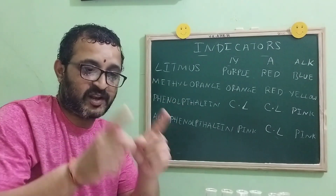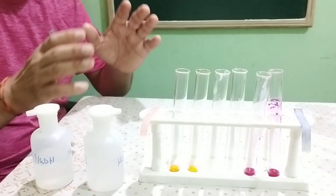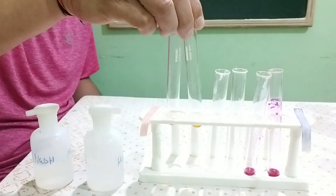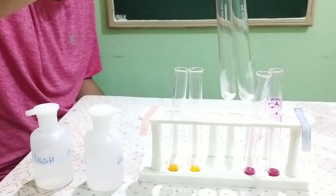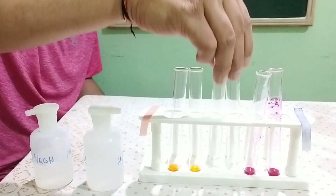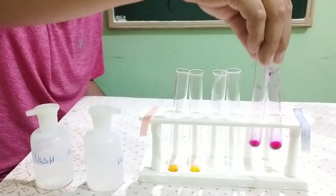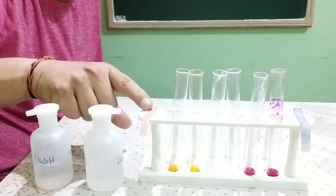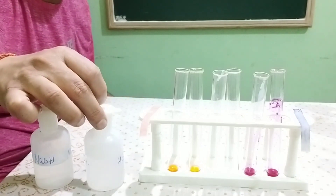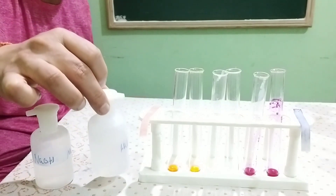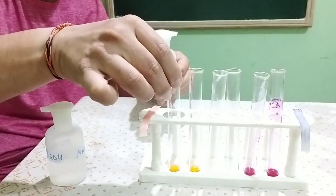Now we will see all these colors in practicals. We have taken methyl orange, which is orange in color, in two test tubes. In two more test tubes, we have taken phenolphthalein, which is colorless. In two more test tubes, we have taken alkaline phenolphthalein, which is pink. Along with that, one red litmus and one blue litmus. The acids and bases for this experiment are HCl and sodium hydroxide. Now we will start with HCl — observe very carefully children.